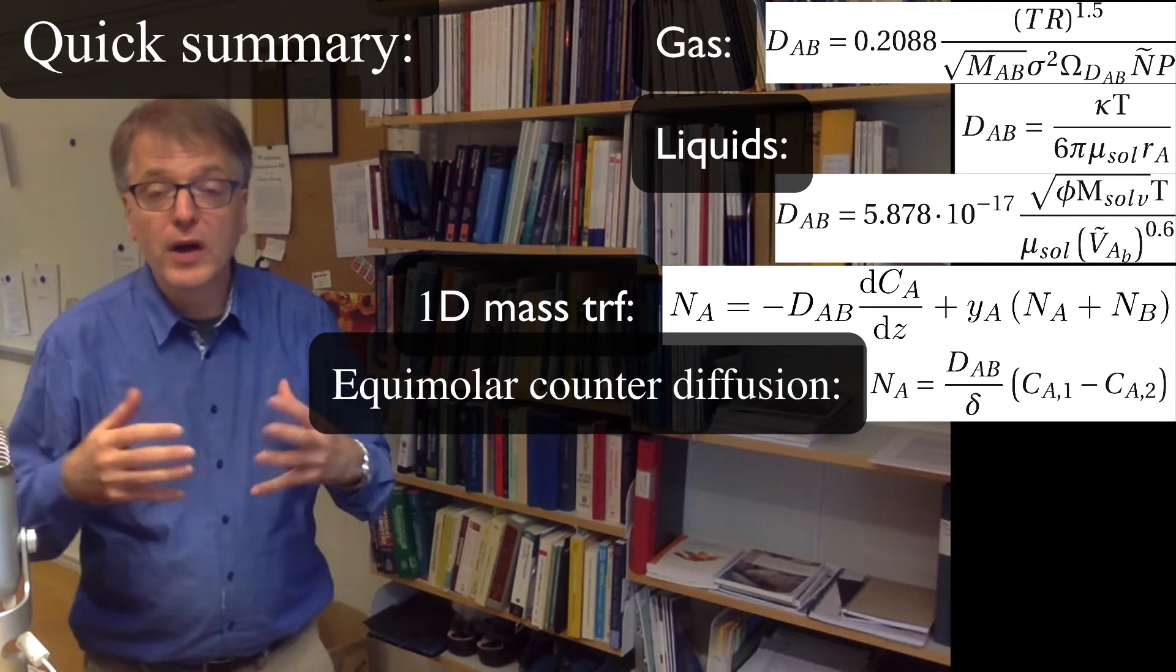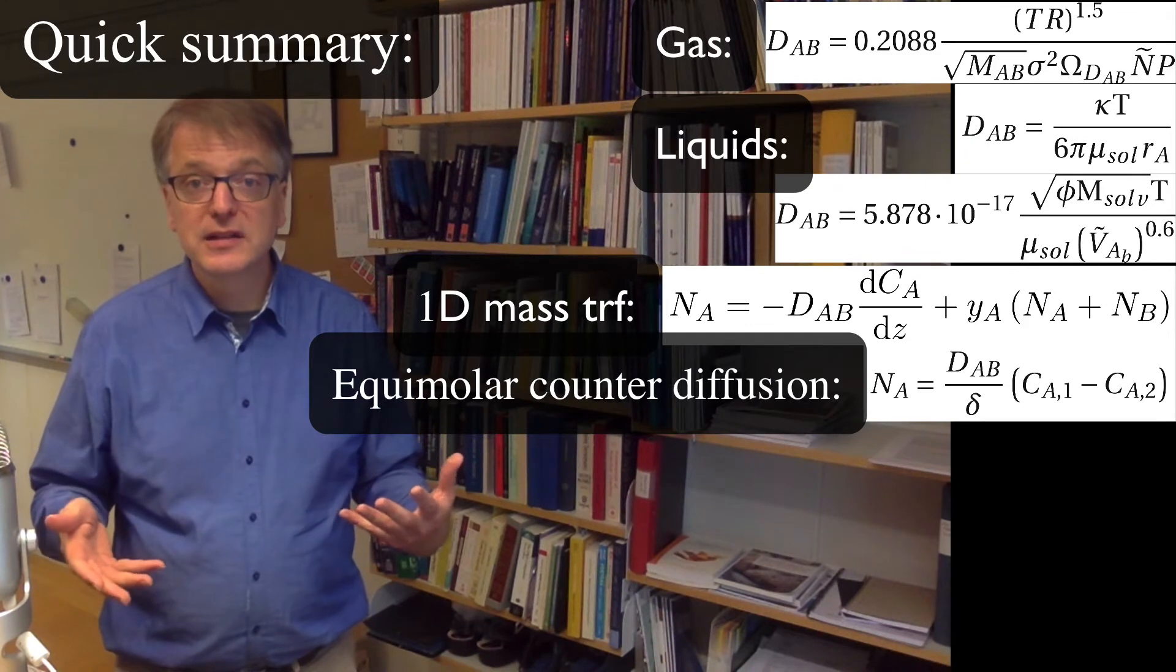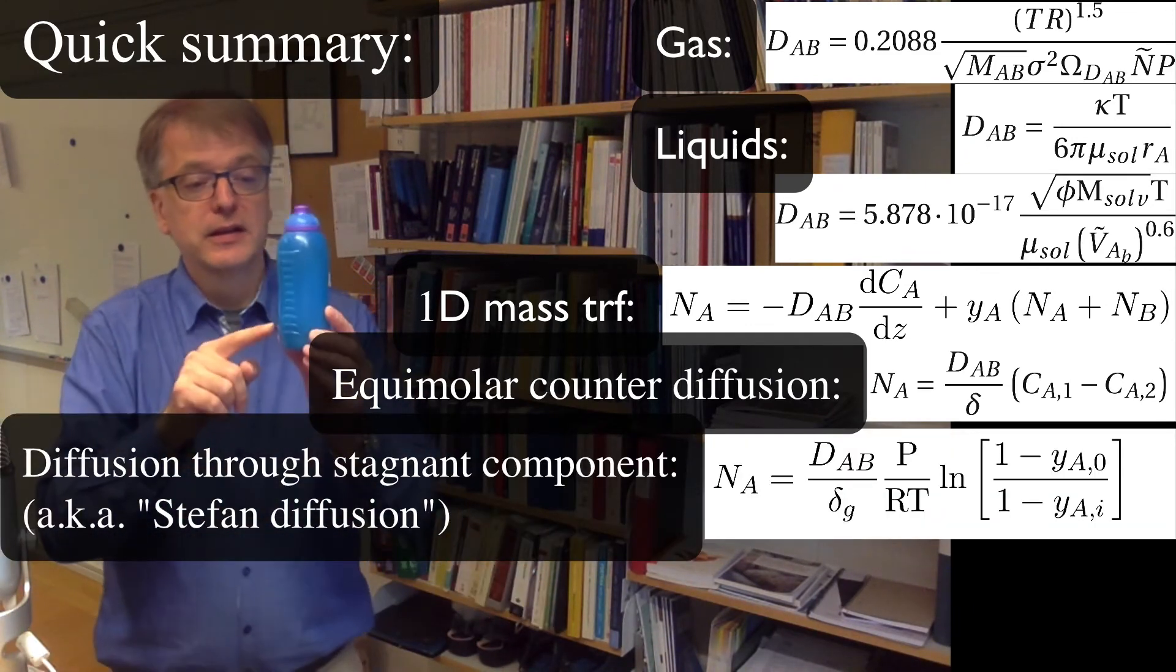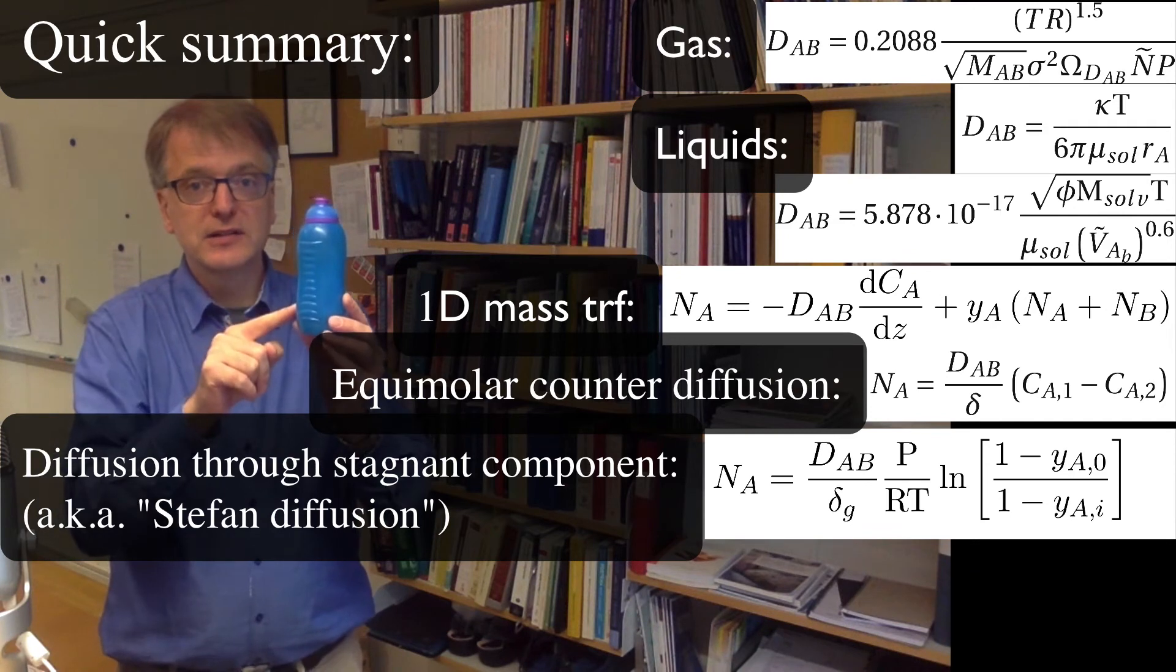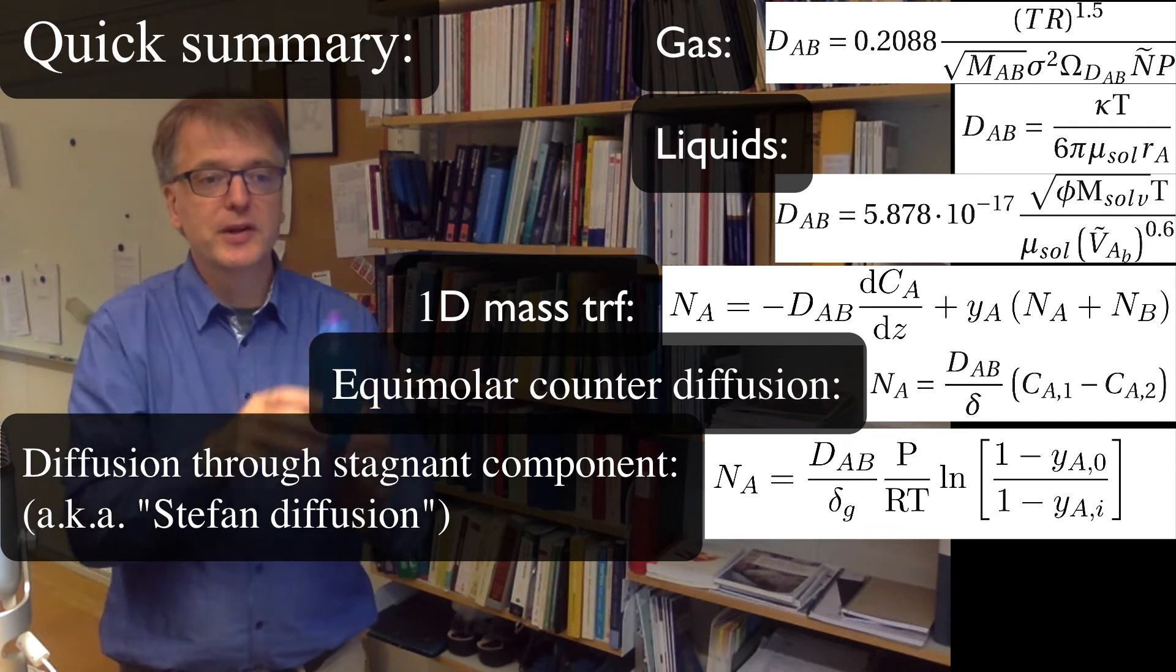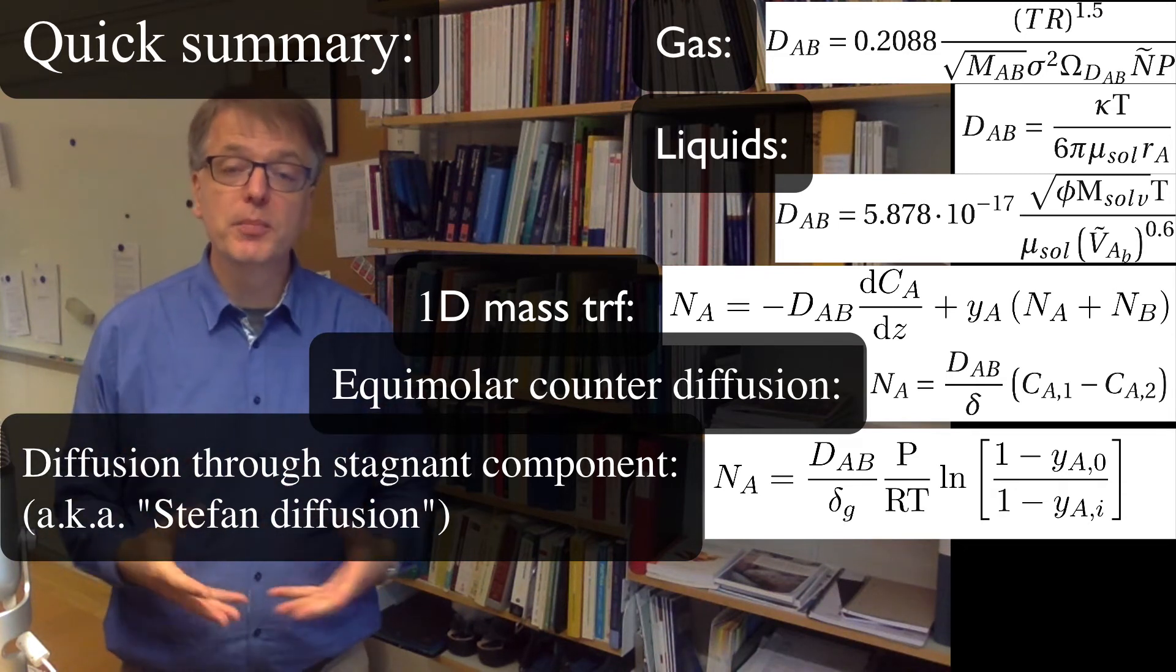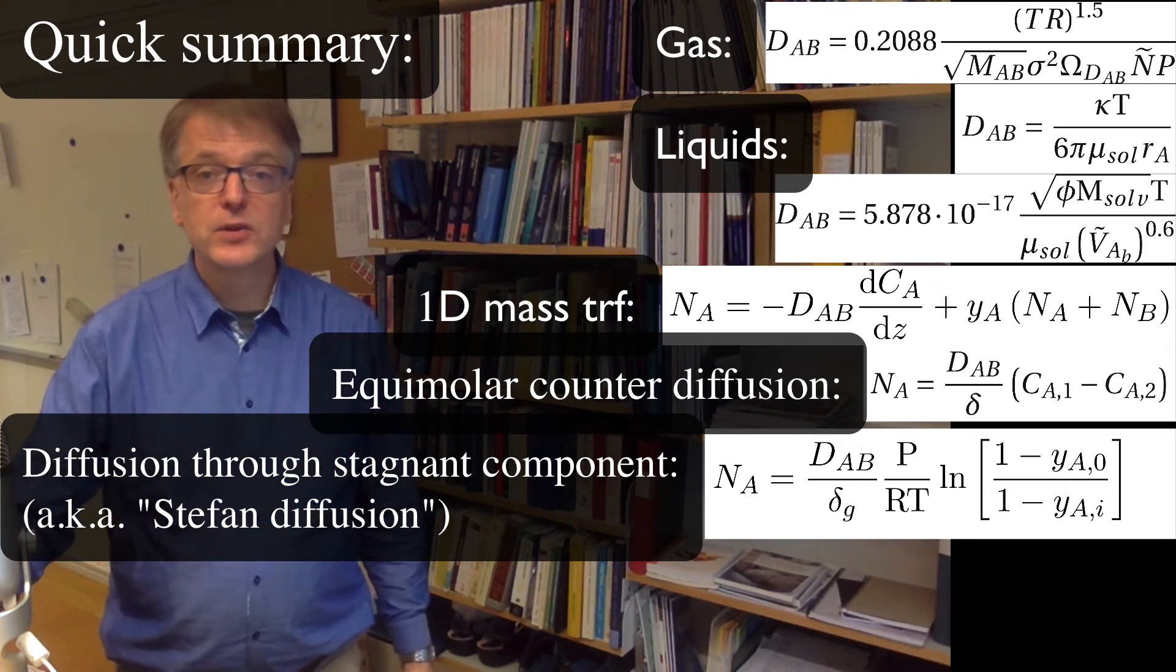And if we have that we get the linear equation that looks like this. And if we instead have the other special case where one component is standing still, like air in this flask here is essentially standing still and water is slowly evaporating out, then we instead get diffusion into stagnant component which is also called Stefan diffusion.